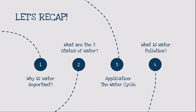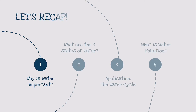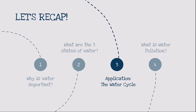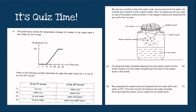Let's recap the four main guiding questions that we have gone through. Water is important because all living things need water to survive, including plants. The three states of water are solid (ice), liquid (water), and gas (water vapour or steam). There are a total of five main processes that change the state of water. What about the four factors that affect the rate of evaporation? Do you remember the acronym WHAT? The basic water cycle involves three steps: evaporation, condensation, and precipitation. Finally, water pollution occurs when water gets contaminated with dirt or bacteria. Pause the video to attempt the quiz questions on your own, then play the video to check your answers.